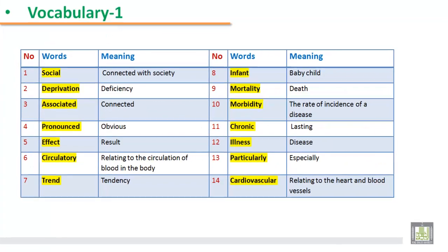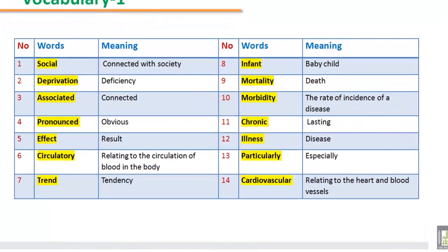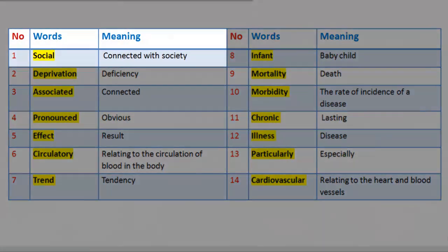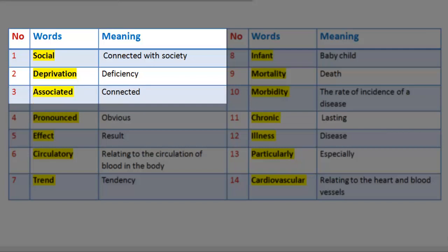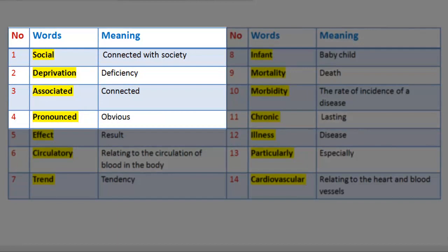Conclusion Vocabulary 1. 1. Word: Social — Meaning: connected with society. 2. Word: Deprivation — Meaning: deficiency. 3. Word: Associated — Meaning: connected. 4. Word: Pronounced — Meaning: obvious.